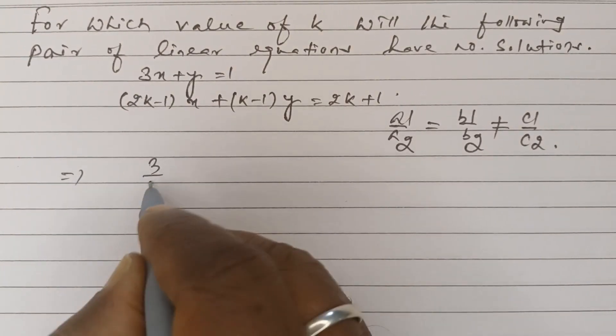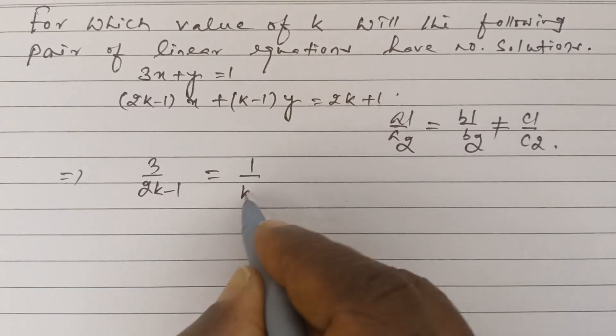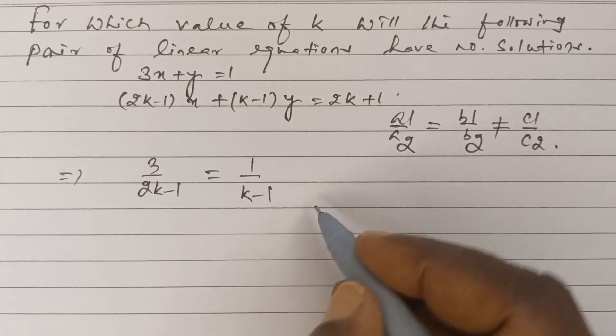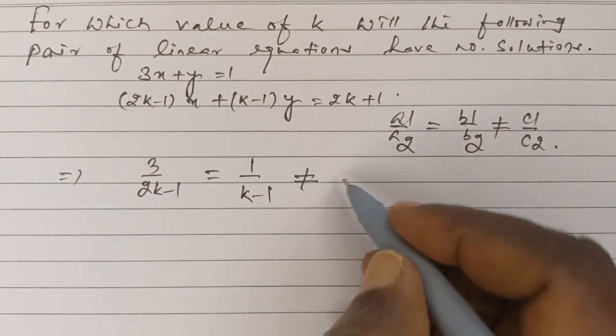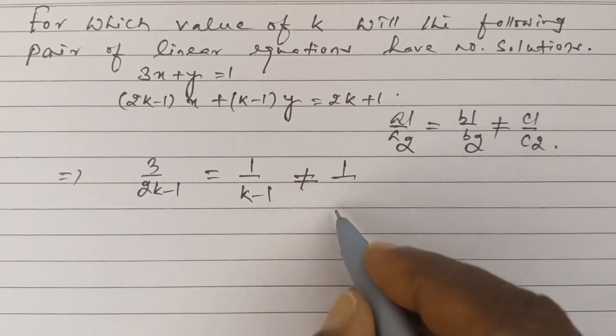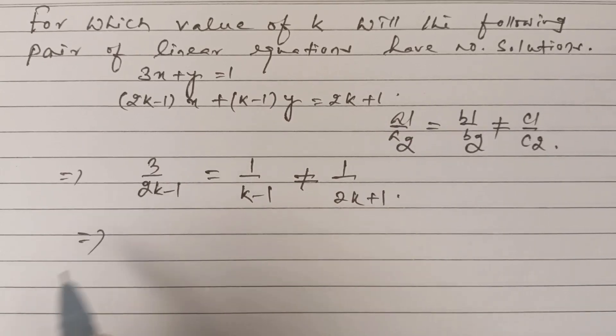So, 3 by (2k minus 1) is equal to 1 by (k minus 1). The first condition. The third one is negative 1 over (2k plus 1). First, second, and third.